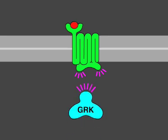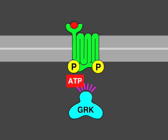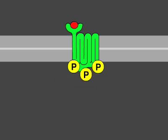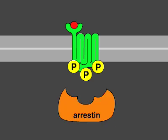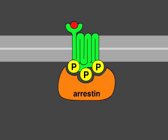In this case, a receptor kinase phosphorylates the cytosolic portions of the activated receptor. Once a receptor has been phosphorylated in this way, it binds with high affinity to an arrestin protein, which inactivates the receptor by preventing its interaction with G-proteins. Arrestins also act as adapter proteins and recruit the phosphorylated receptors to clathrin-coated pits, from where the receptors are endocytosed.